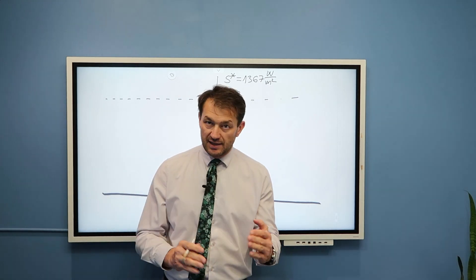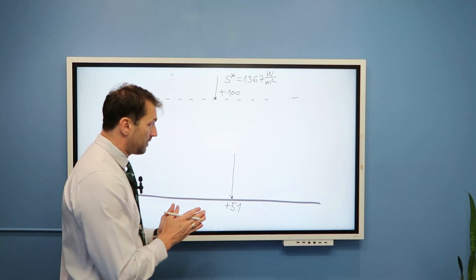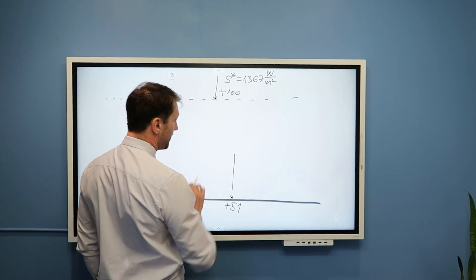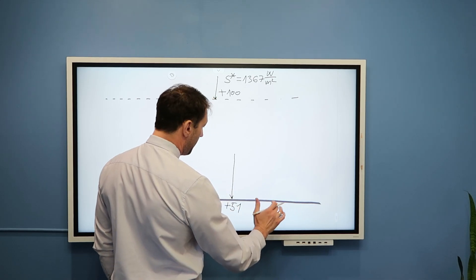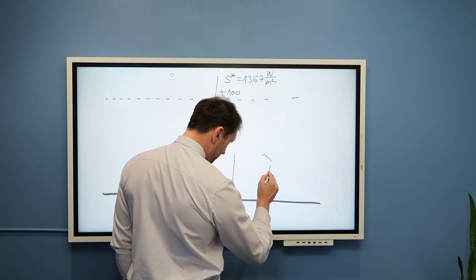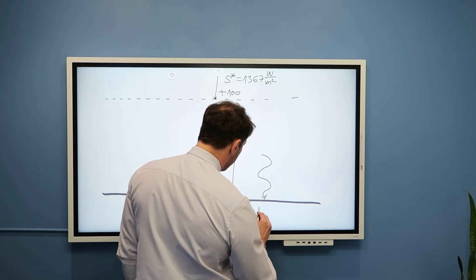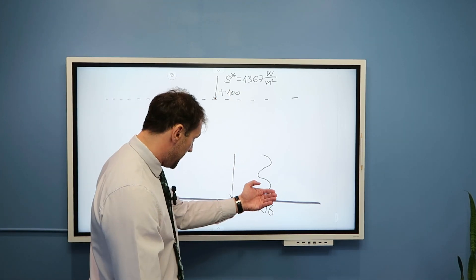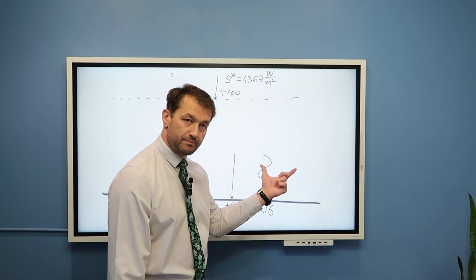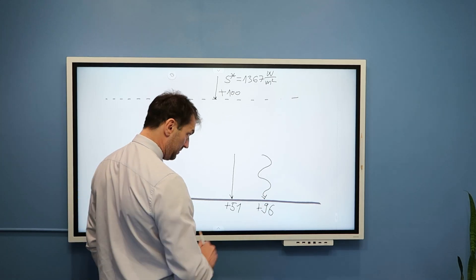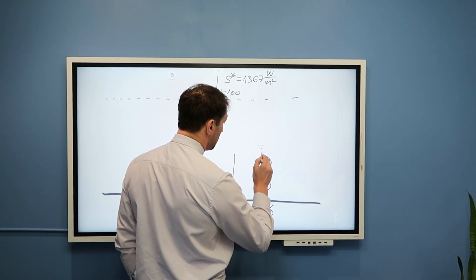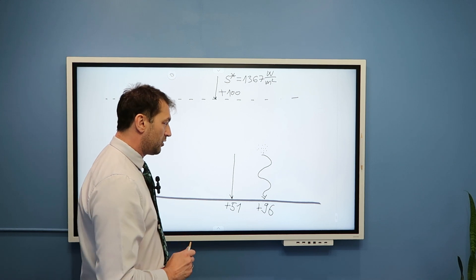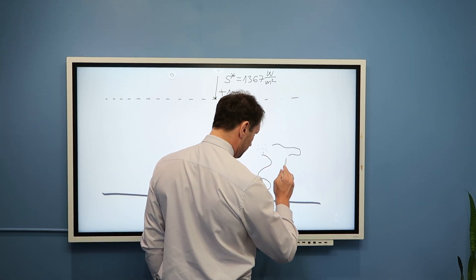Now we are introducing terrestrial radiation and radiation from the atmosphere. In addition to this shortwave radiation, the Earth's surface also receives approximately plus 96 units of longwave radiation from the atmosphere — that means from the gases in the atmosphere, predominantly water vapor and carbon dioxide, as well as clouds in the atmosphere.